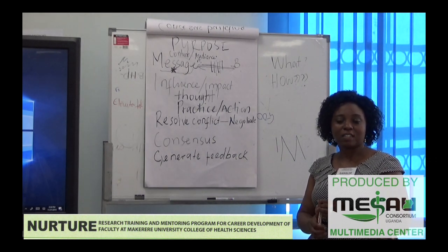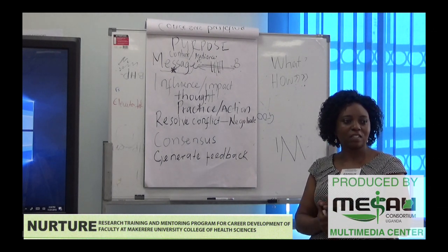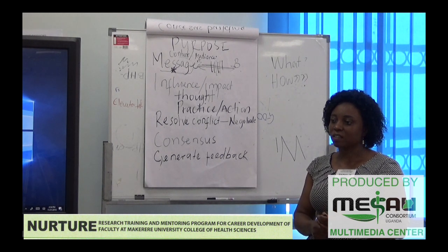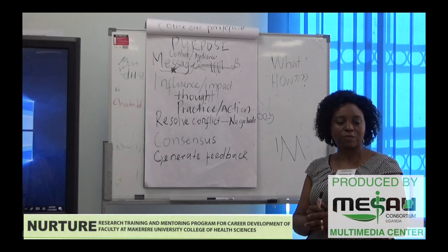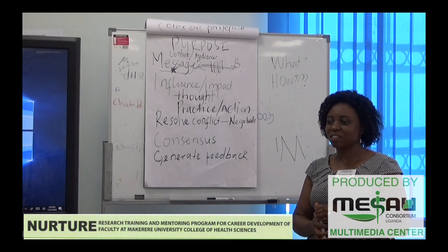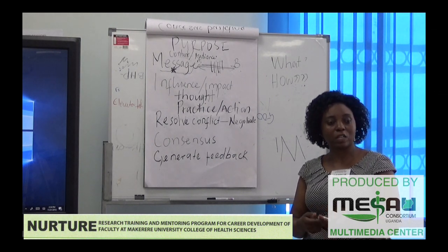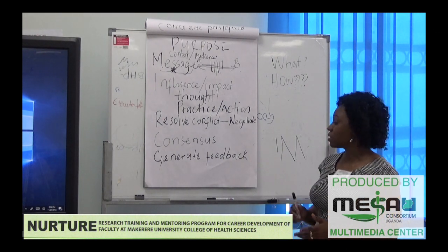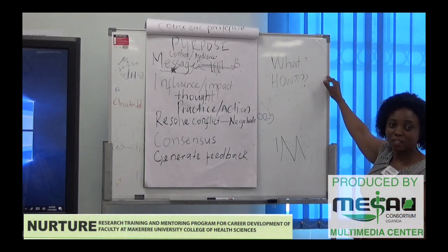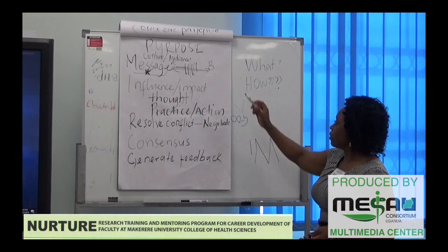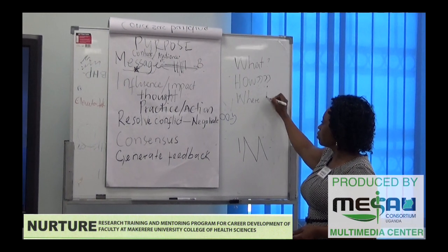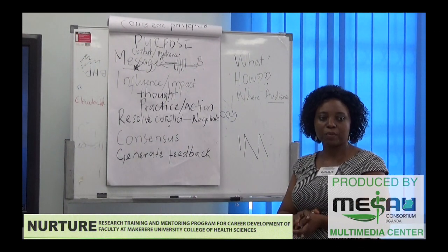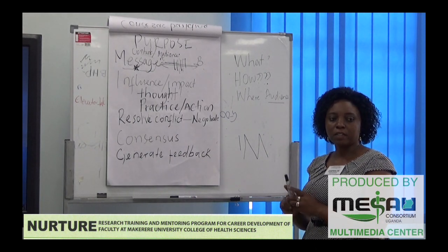What do we usually communicate as scientists and faculty? We communicate findings, study findings, results, student performance, policies, and news. All of these are things that come into what we communicate. We also need to know where the communication is going — our audience. We need to factor the audience into our communication plan so that we design the package that goes to them. How does the audience determine how we communicate? Their level of understanding.